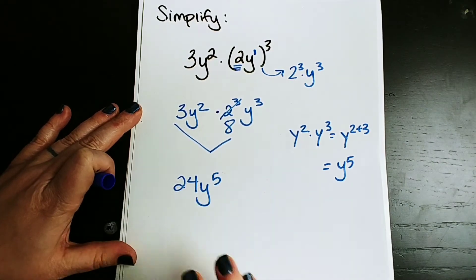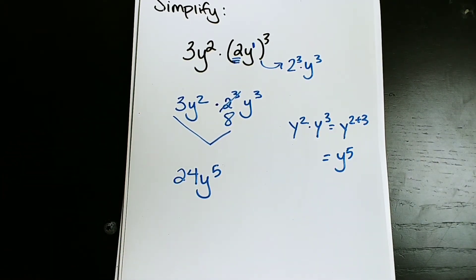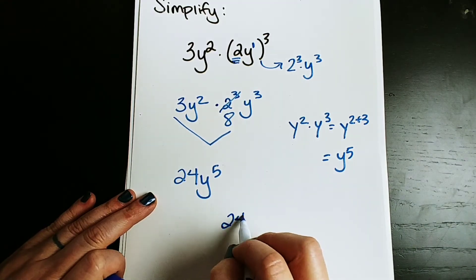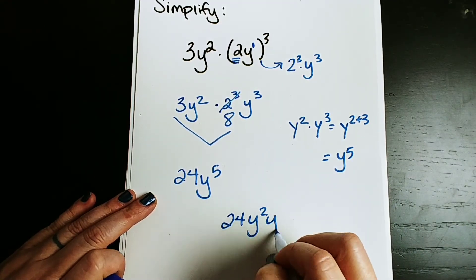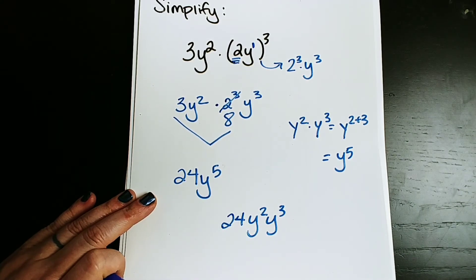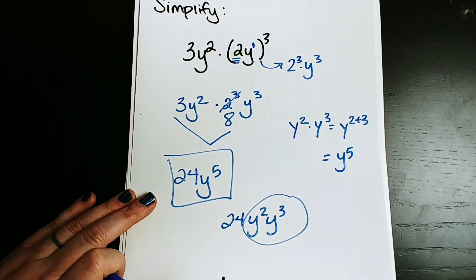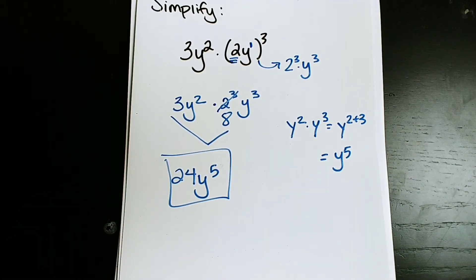So 24y to the fifth is the answer in simplified form — it's in its most simplified form. You don't have multiple instances of the same variable. You couldn't leave it as 24y squared times y cubed; that would be like giving a final answer of two plus three instead of five. You need to combine them and get 24y to the fifth as your final answer. I hope that helped — pop any questions in the comments section, subscribe to our YouTube channel, and thanks for watching.